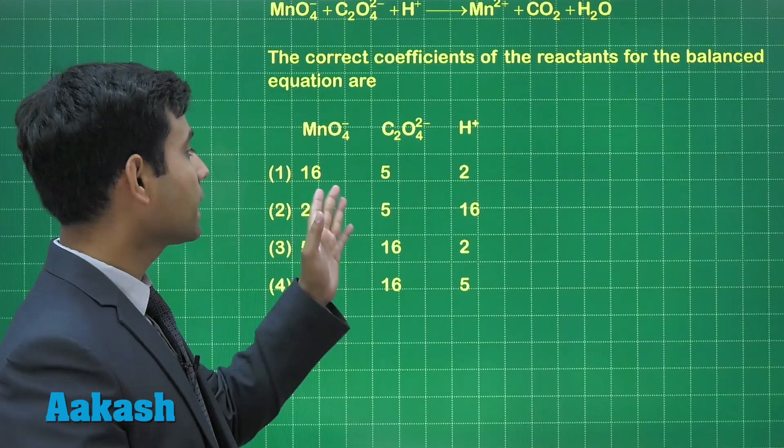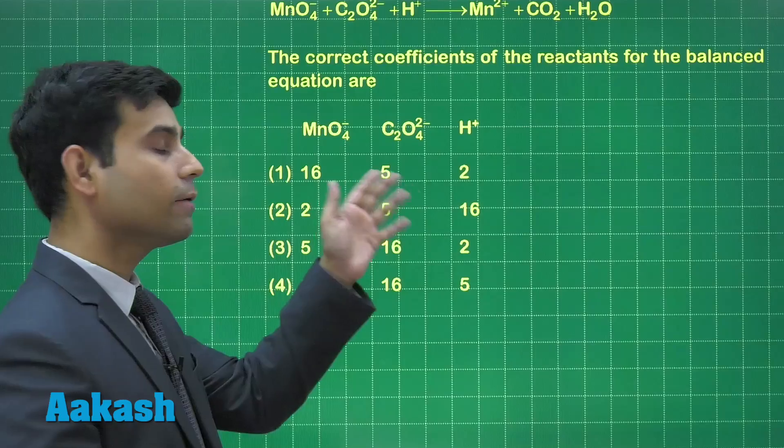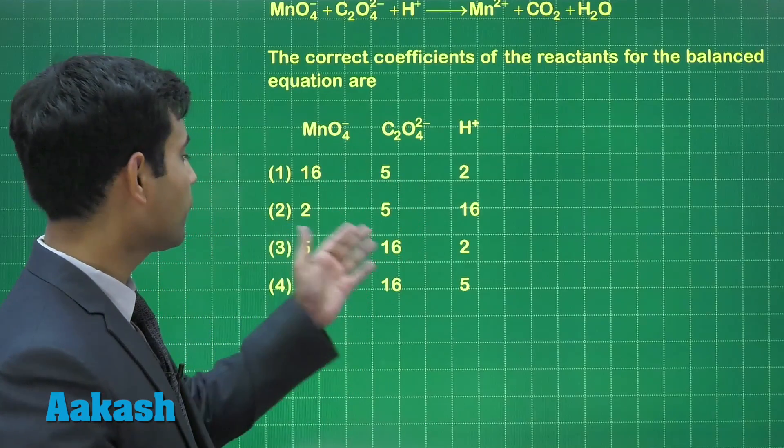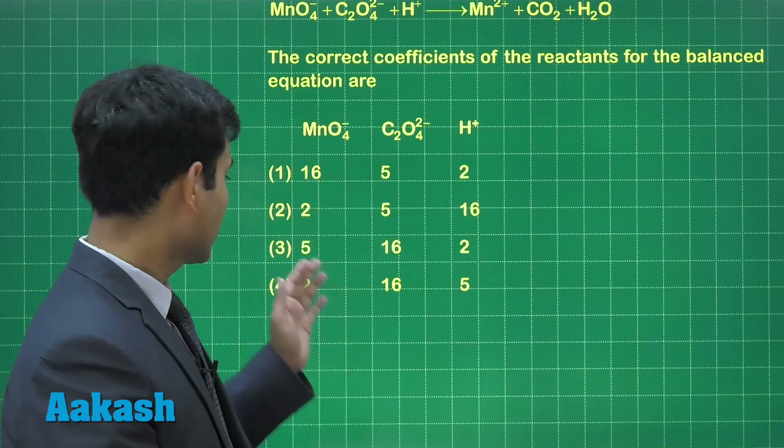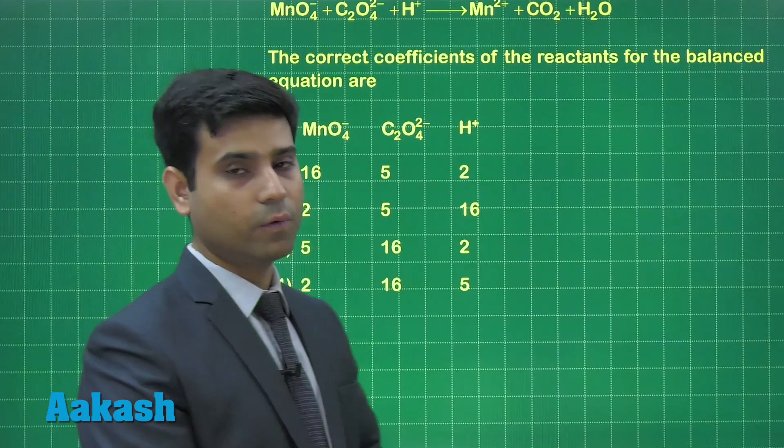The coefficient for permanganate, oxalate ion and H plus are respectively 16, 5, 2 in first option, 2, 5, 16 in second option, 5, 16, 2 in third option, and 2, 16, 5 in the fourth option.